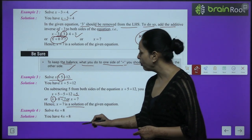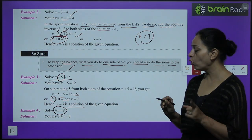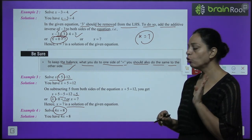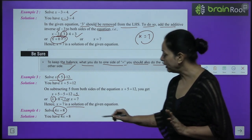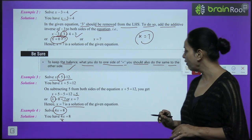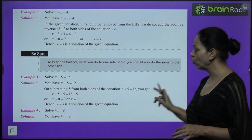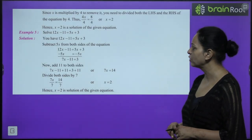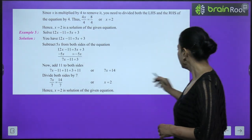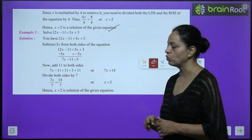Example 4: Solve 4x equals 8. Since x is multiplied by 4, divide both sides by 4. The 4s cancel, giving x equals 2 as the solution.